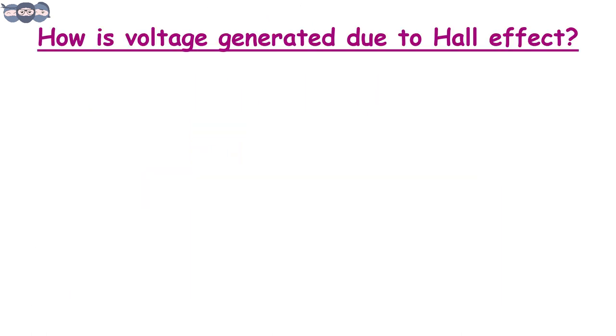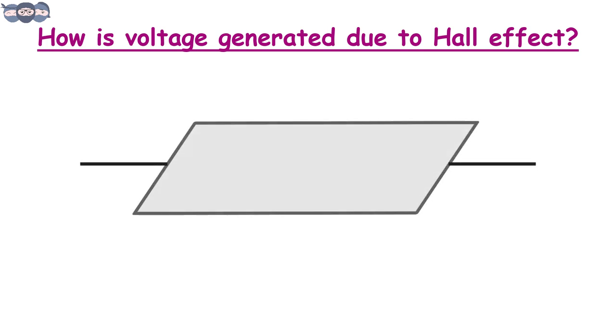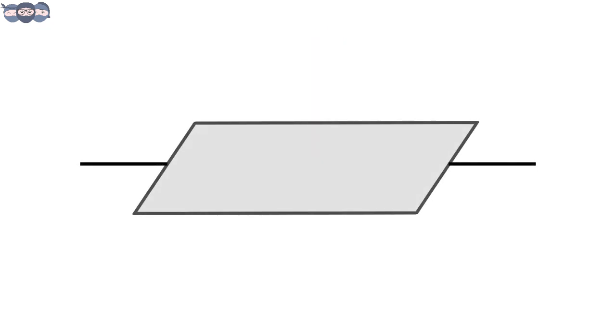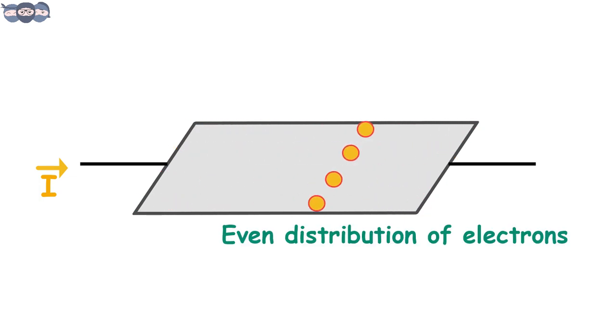Let us understand how the voltage is generated. Consider a thin sheet of metal connected to a current source. As seen in the animation, we can see the electrons moving across the thin metal sheet. The electrons are distributed evenly across the sheet.